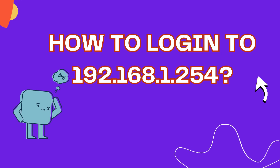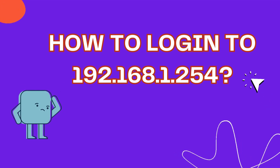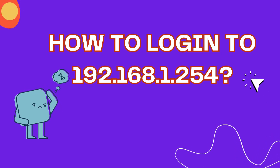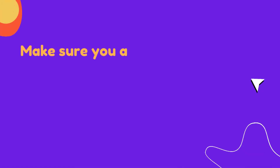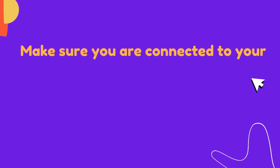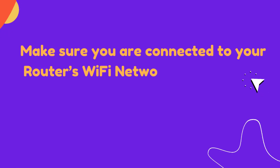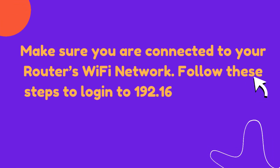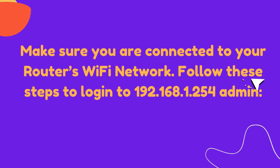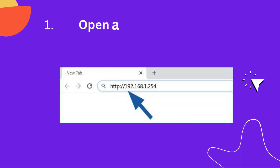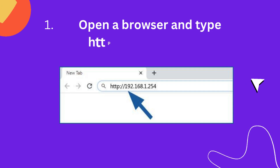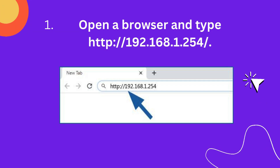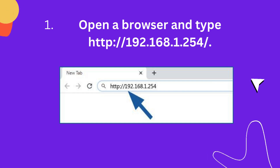How to log in to 192.168.1.254: Make sure you are connected to your router's Wi-Fi network. Follow these steps to log in to the 192.168.1.254 admin panel. Step 1: Open a browser and type http://192.168.1.254.